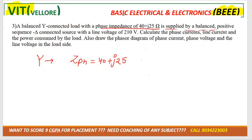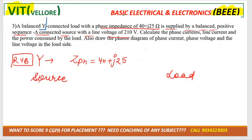It is supplied by a balanced positive sequence — positive sequence is RYB — Delta-connected source with a line voltage of 210V. So there is one source and one load. The source is Delta-connected and the load is star-connected.